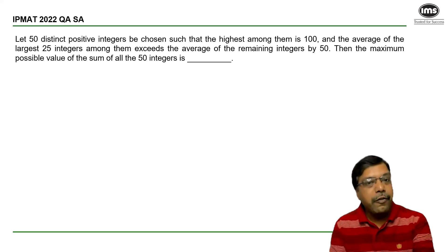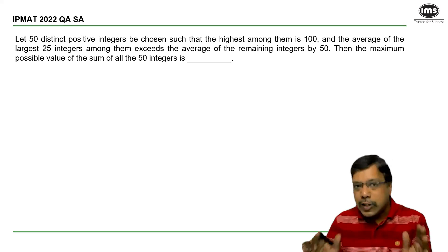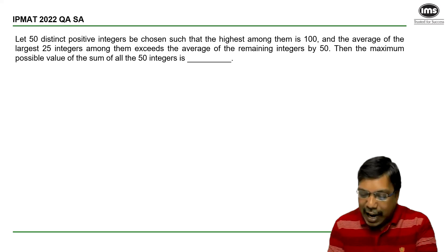There are 50 integers which are distinct. The average of the largest 25 integers—stop there. He says the highest among them is 100.